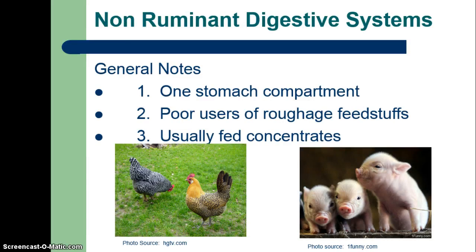Some general information on non-ruminants: they have one stomach compartment, very similar to what humans have. They are very poor users of roughage feedstuffs, so typically we're going to feed them concentrates or grains. Horses do have a little bit of an adaptation that allows them to be more efficient users of roughages than most other non-ruminant animals, but as a rule most non-ruminants are fed concentrates.